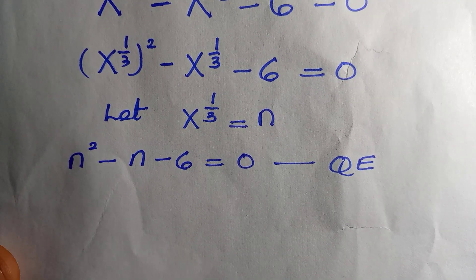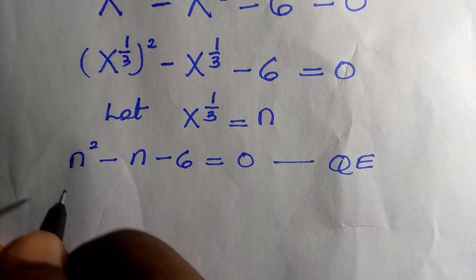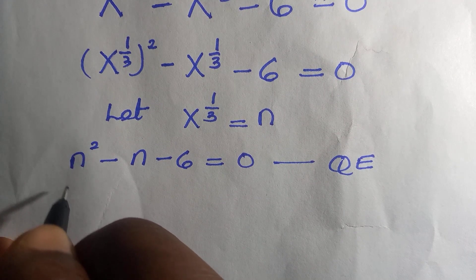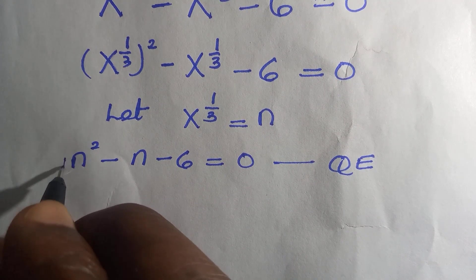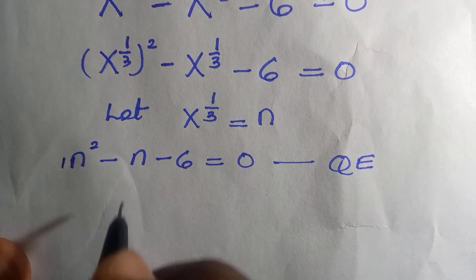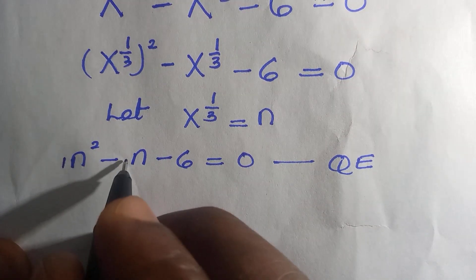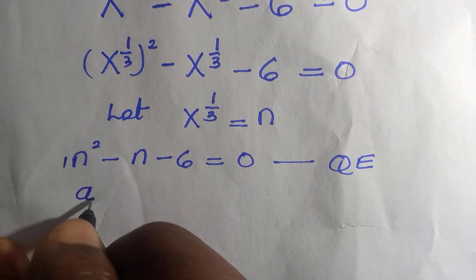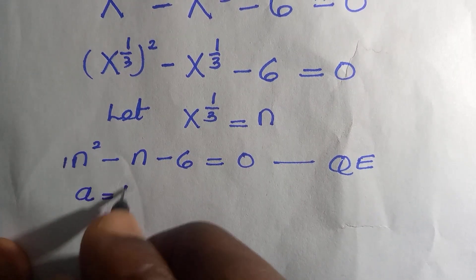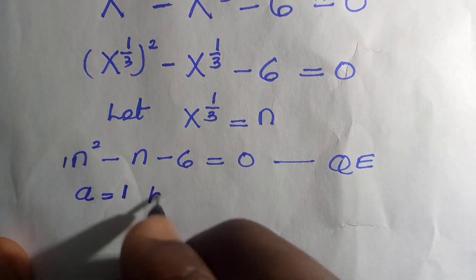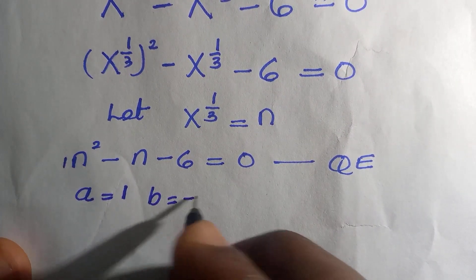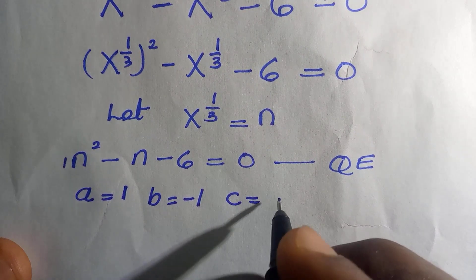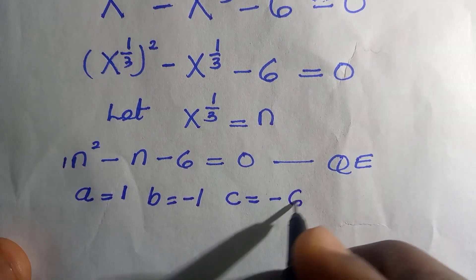So replacing x to the power of one-third with n, we have n squared minus n minus six equals zero. This is a quadratic equation, so we are going to solve it using the quadratic formula. The coefficient of n squared is one, the coefficient of n is negative one, and the constant is negative six, so a equals one, b equals negative one, and c equals negative six.